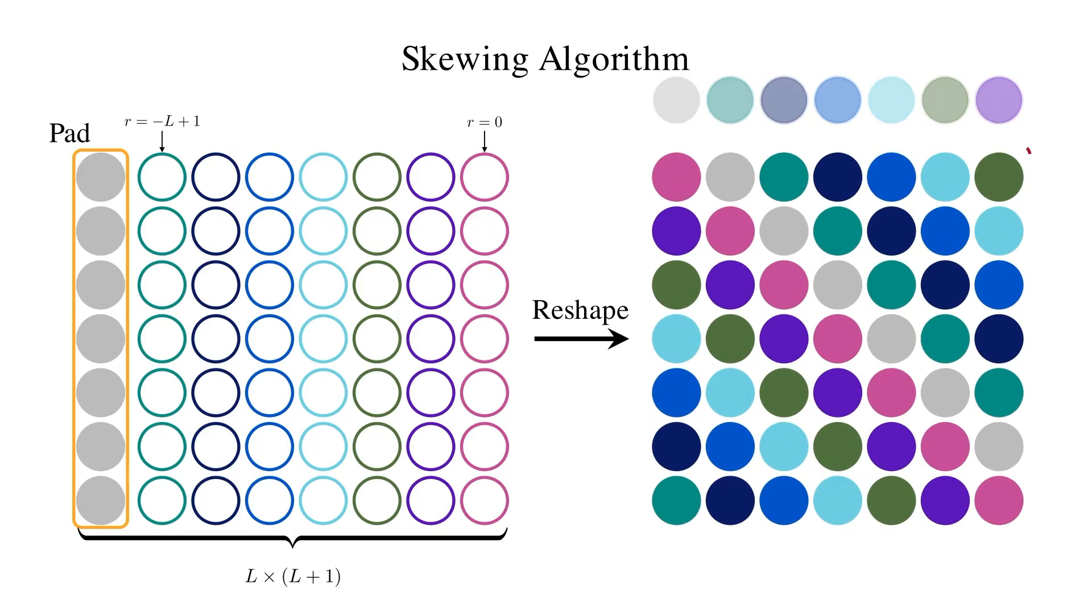And at the end, we discard the first row, and what is left is this L by L matrix. Notice that the column indicated by r equals 0 on the left is now in the diagonal of the matrix on the right, because the diagonal refers to i equals j and therefore r is 0.